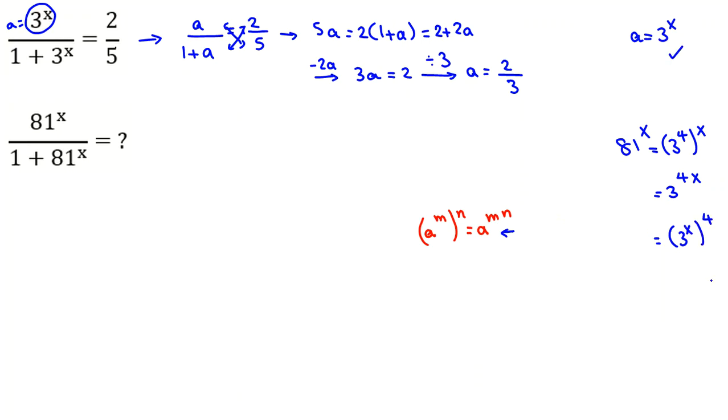3 to the x here we said equals a, so this is a to the 4. So, this part equals a to the 4 over 1 plus a to the 4. From here, we said a equals 2 over 3. So it will be 2 over 3 to the 4, over 1 plus 2 over 3 to the 4. This changing variable is so much easier.